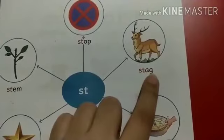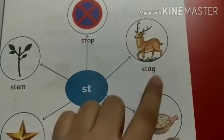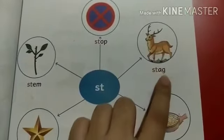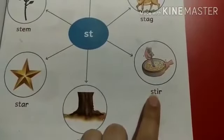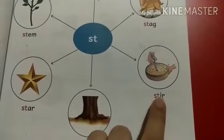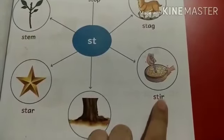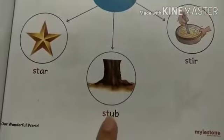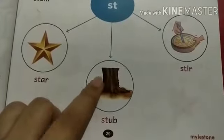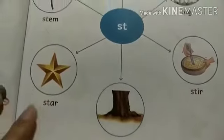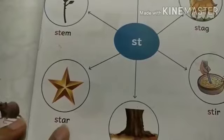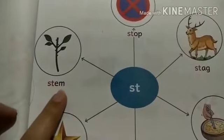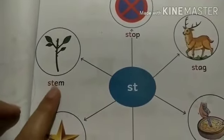Next is: st, ag — stag. The stag ran very fast. Next one is: st, ir — stir. Next is: st, ub — stub. This is a small stub. Next one is: st, ar — star. Next is: st, em — stem.